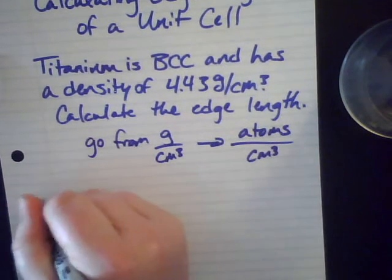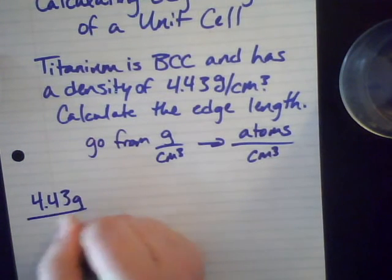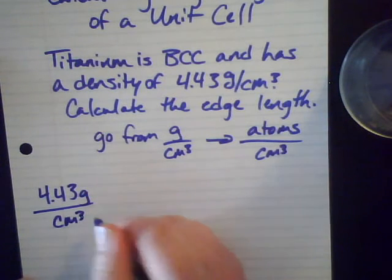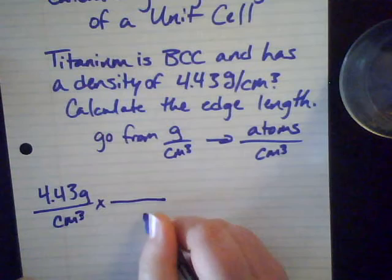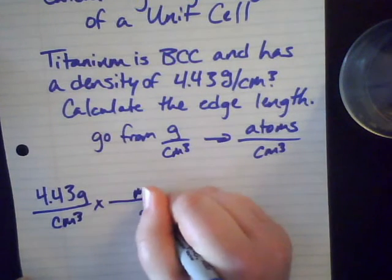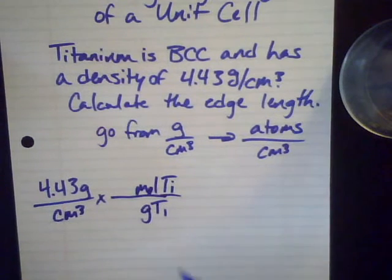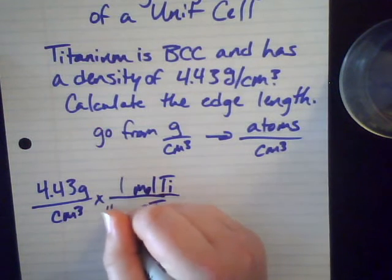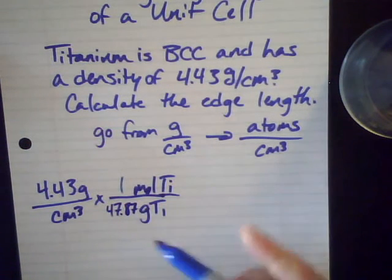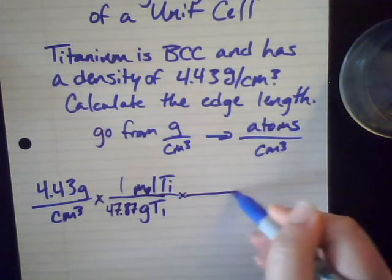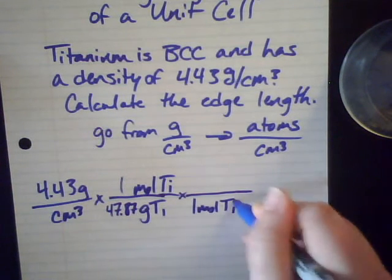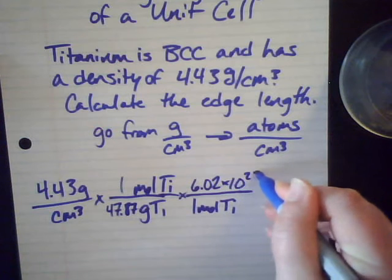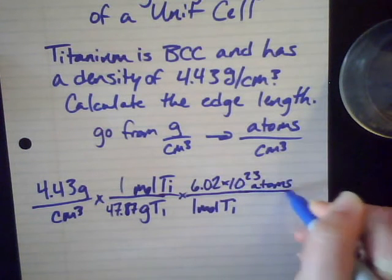So if we need to use Avogadro's number, that means we need to go from grams to moles first. So if we're given 4.43 grams per one centimeter cubed, and we'll just keep the per centimeter cubed, then we go from grams of titanium to moles of titanium. So if I go to my periodic table and I look up my molar mass of titanium, then I find in one mole there is 47.87 grams.